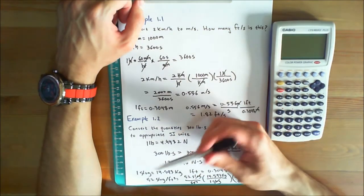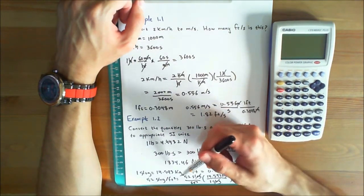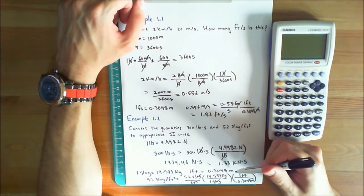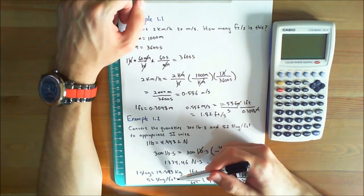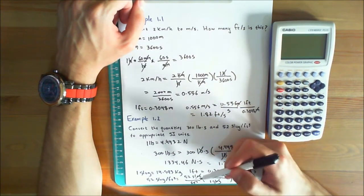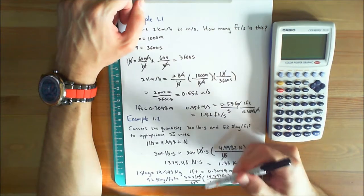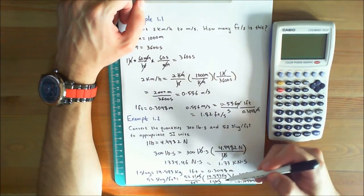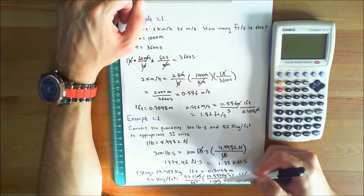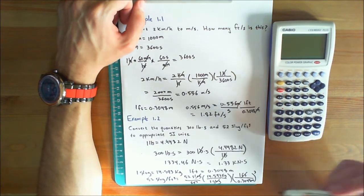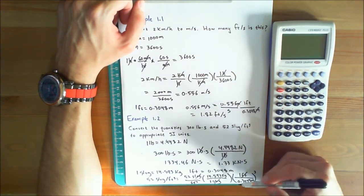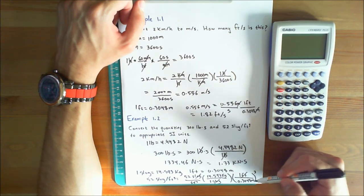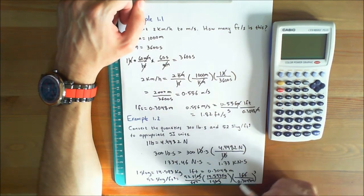Recall that 1 slug is equal to 14.593 kilograms and 1 foot is equal to 0.3048 meters. So 52 slug per feet cubed gives you 52 slug per feet cubed on top of each other times 14.593 kilograms since 1 slug gives you 14.593 kilograms. And again times 1 foot over 0.3048 meters. Now you can cancel out the feet—this is cubed—and the slugs.